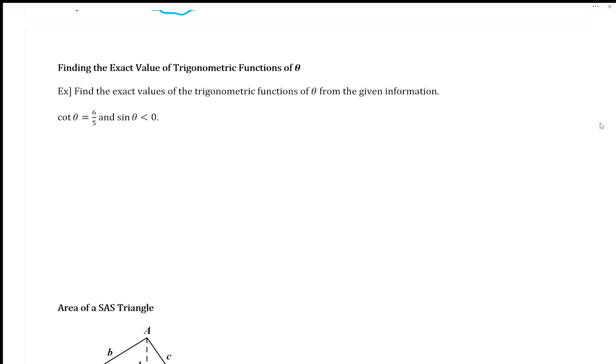Hi everyone and welcome to our video on finding the exact value of the trigonometric functions given another trigonometric function. They tell us cotangent of theta equals six fifths and sine of theta is less than zero.